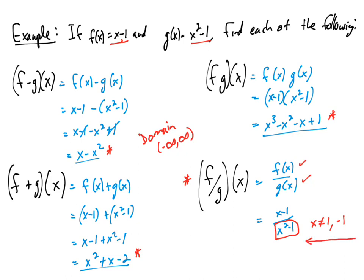So on a number line, we'd have everything except negative 1 and 1 shaded. So the domain here would be negative infinity to negative 1, union negative 1 to 1, union 1 to infinity.